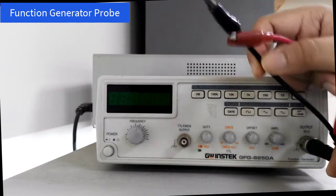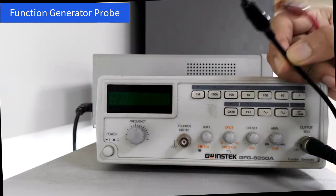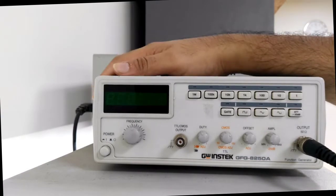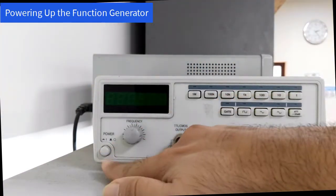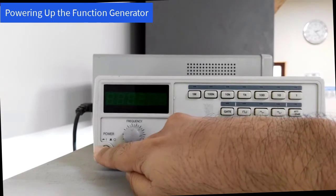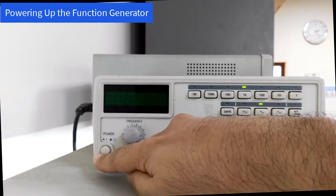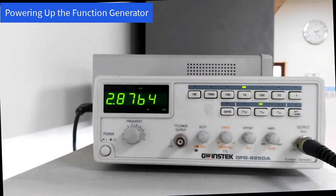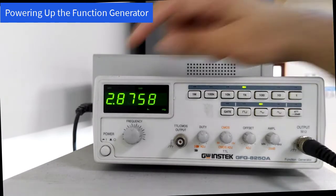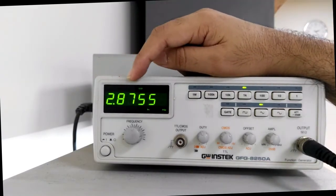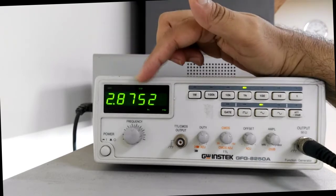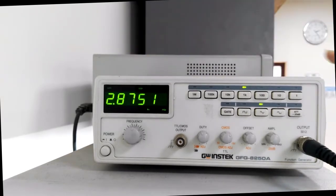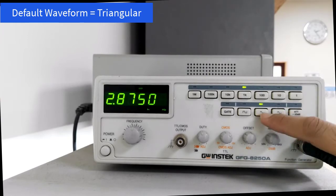This button here is the power button. To get this function generator working, we need to press this power button to turn it on. Then this display will show the frequency that is being supplied by the function generator.